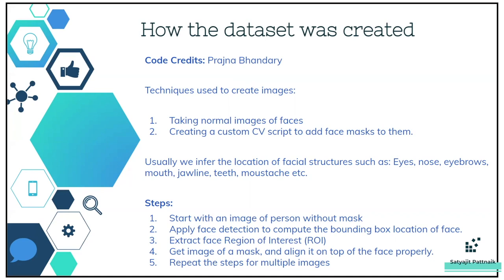When a computer looks at an image, it looks out for important features such as eyes, nose, orientation of ears, beard, mustache — these are the facial structures. The steps are: start with an image of a person without a mask, apply face detection to compute the bounding box location of the face, extract the face region of interest (ROI), get an image of a mask and align it on top of the face properly, and repeat these steps for multiple images.